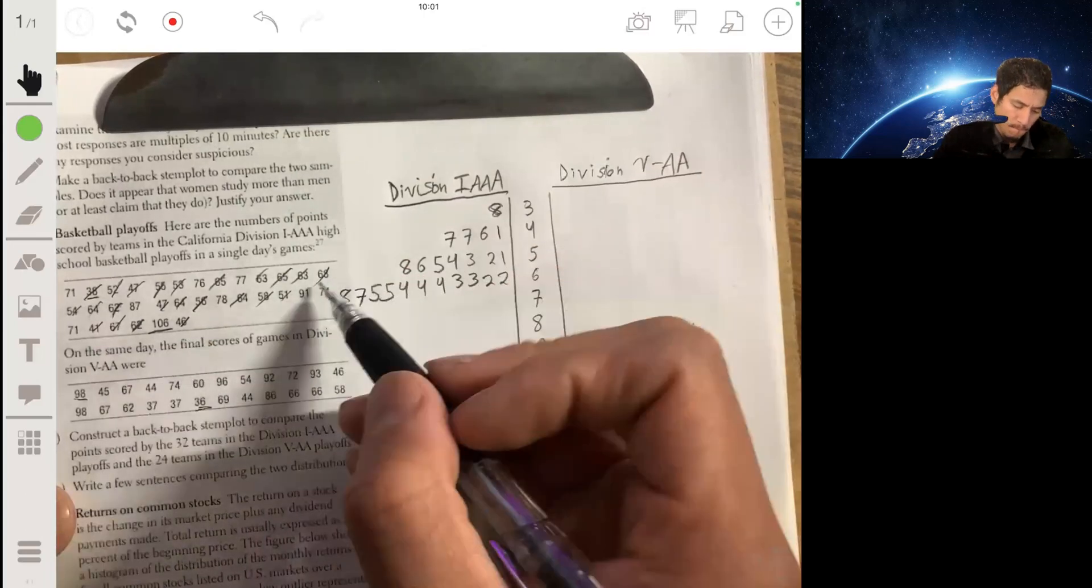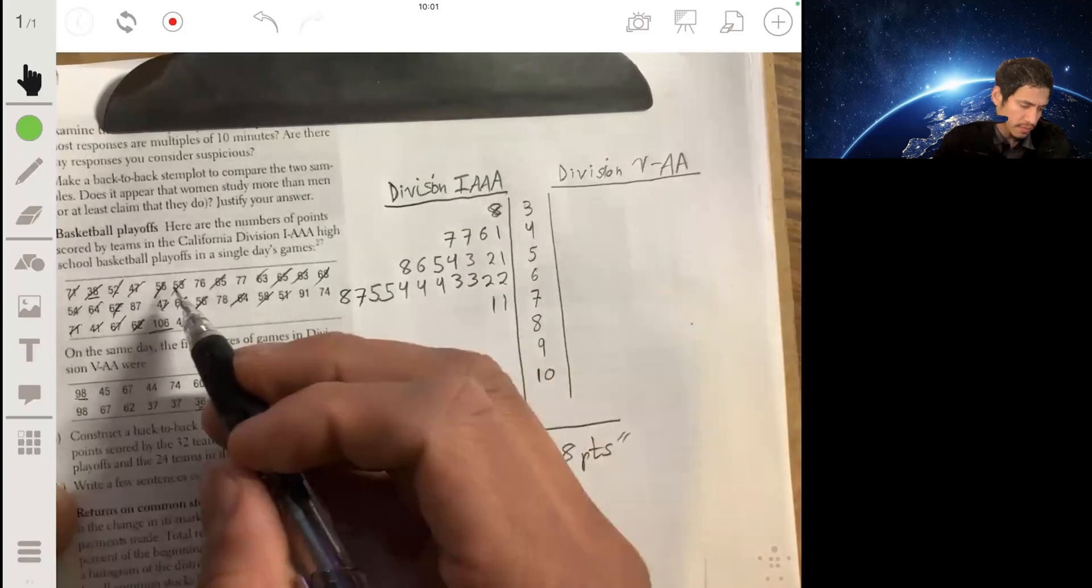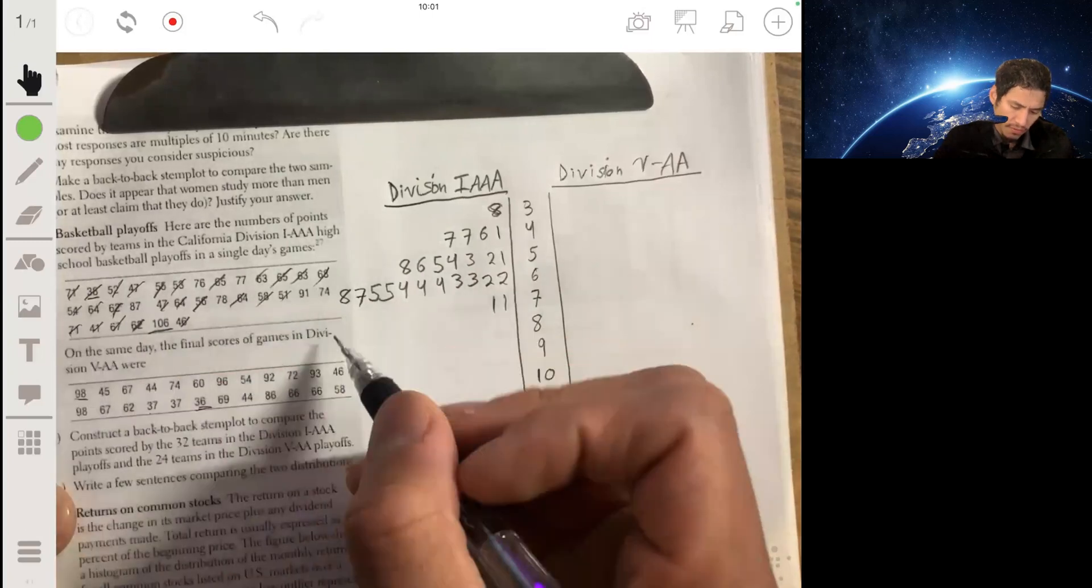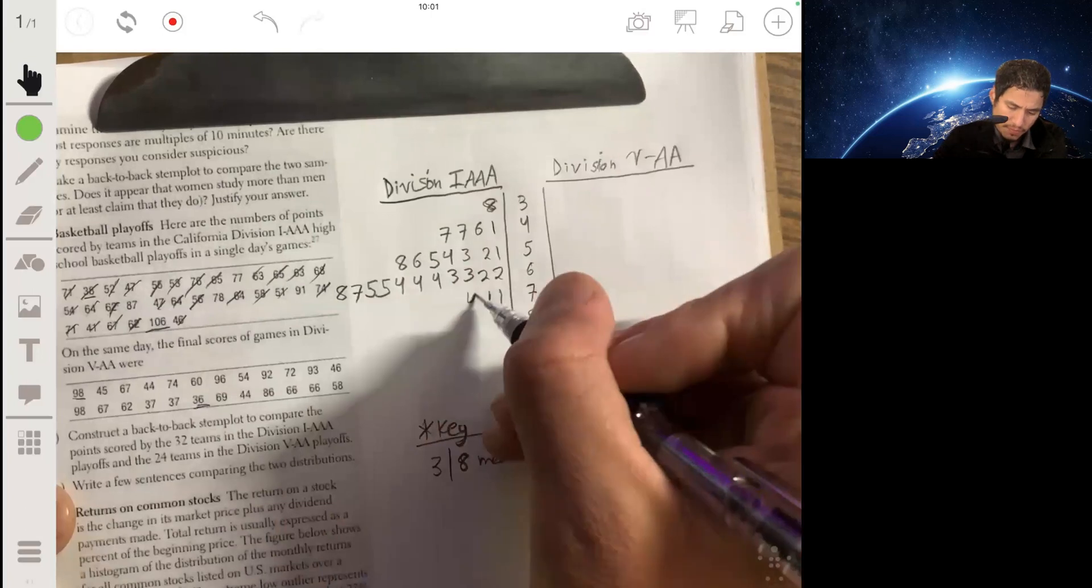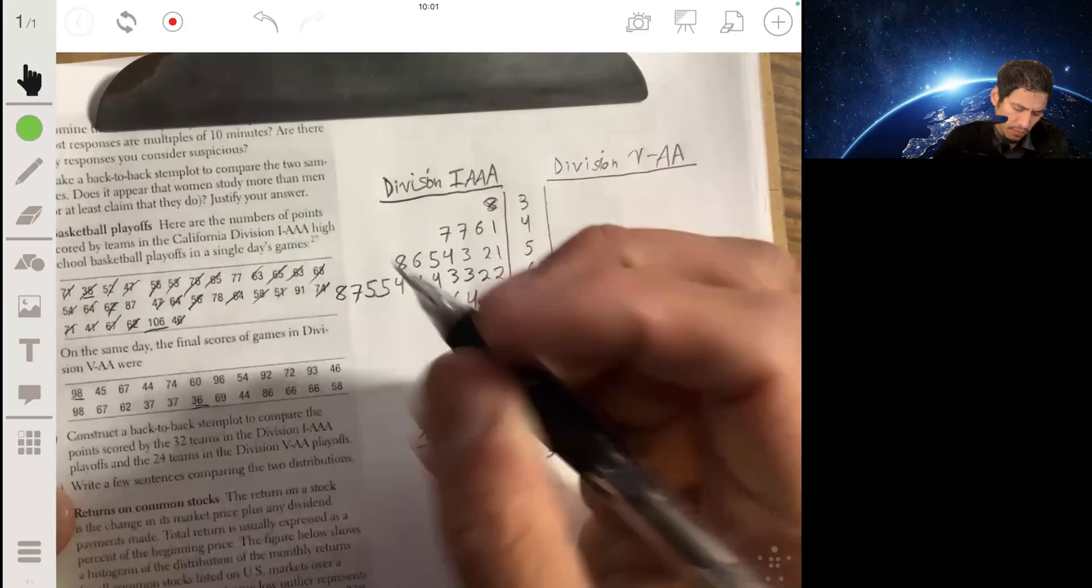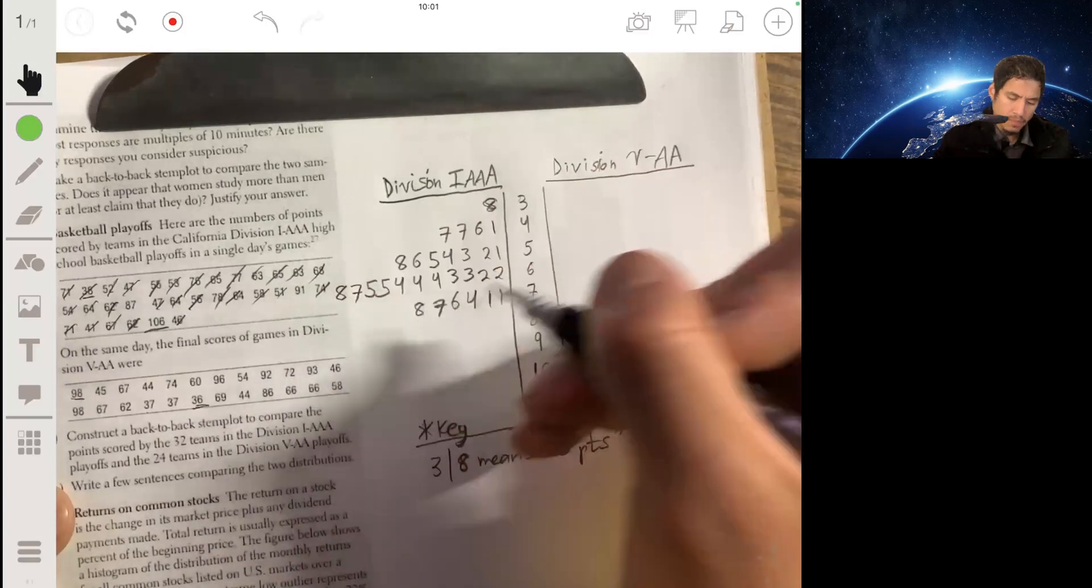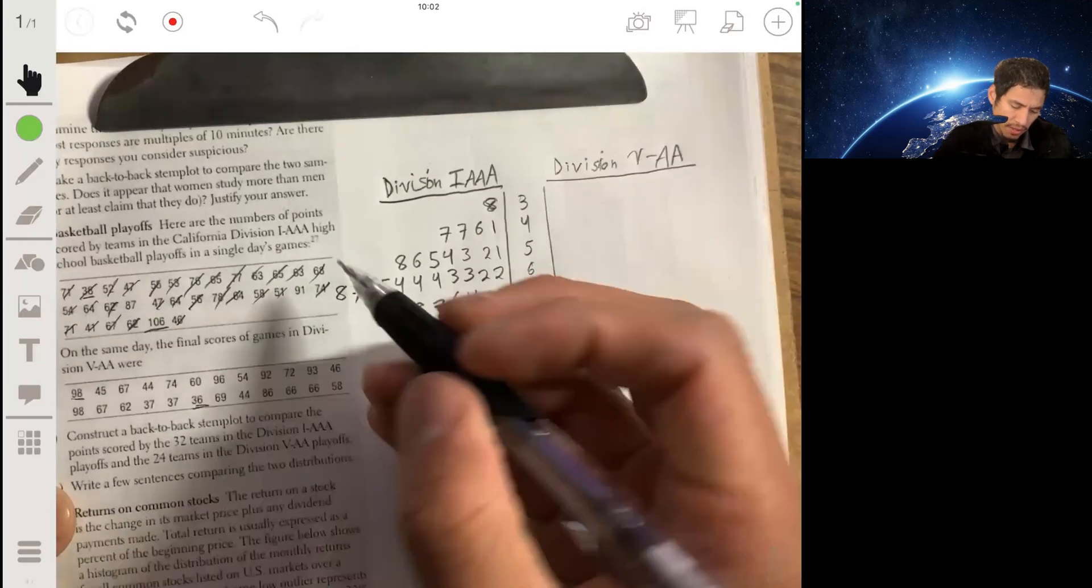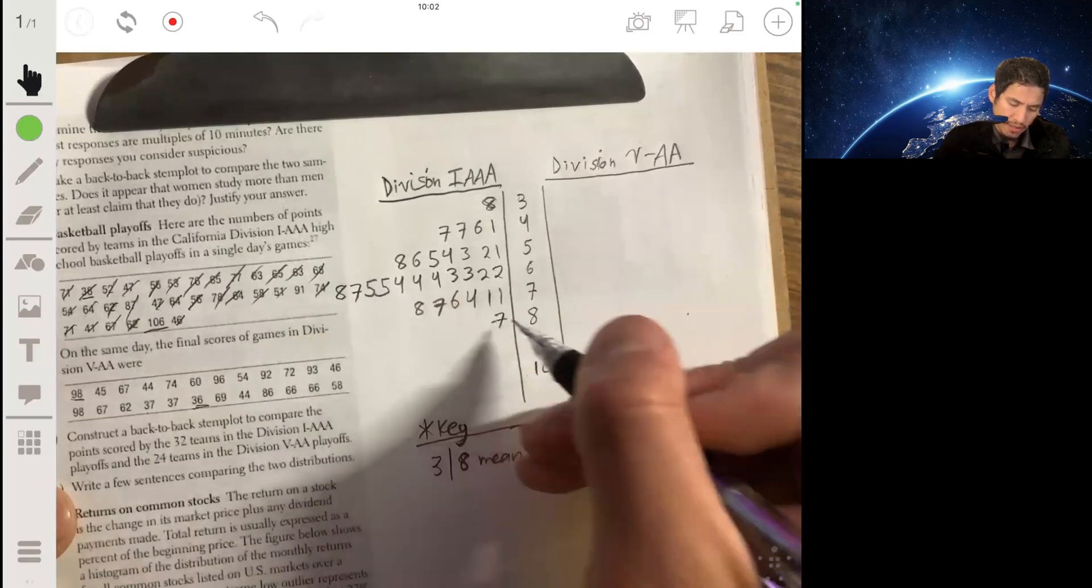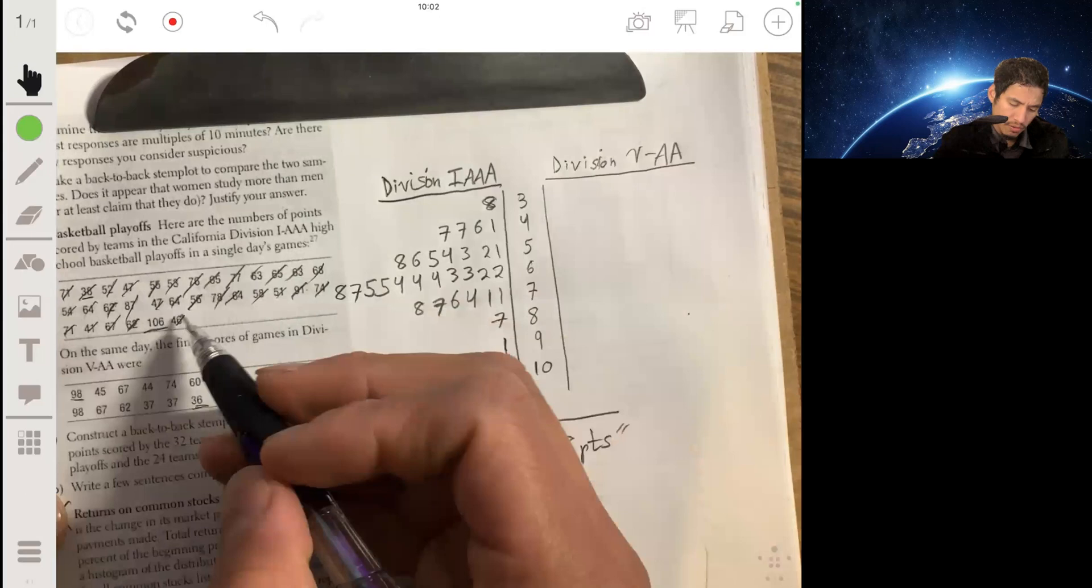Now to the 70s: two 71s, three 74s, six 77s, 77, 78. And then a couple left. We have the 80s: 87, that's all for the 80s. And then 91 and the 106. Nice, okay, so that's the first set Division 1 Triple A.